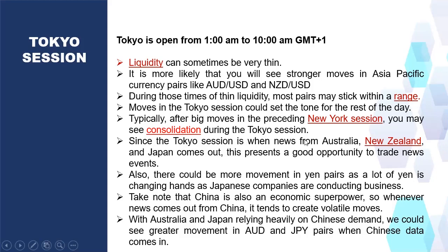Since the Tokyo session is when news from Australia, New Zealand, and Japan comes out, it presents a good opportunity to trade news events involving AUD pairs, NZD pairs, and JPY pairs. There could be more movement in yen pairs as a lot of yen changes hands. China is also an economic superpower — when news comes out from China it tends to create volatile moves, and since Australia and Japan rely heavily on Chinese demand, we could see greater movement in AUD and JPY pairs when Chinese data is released.